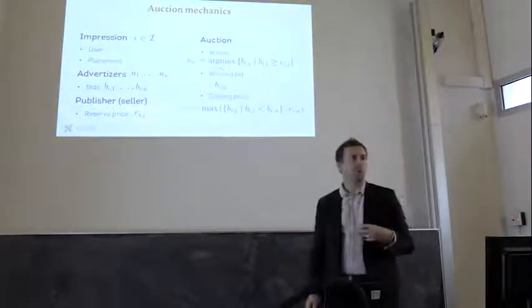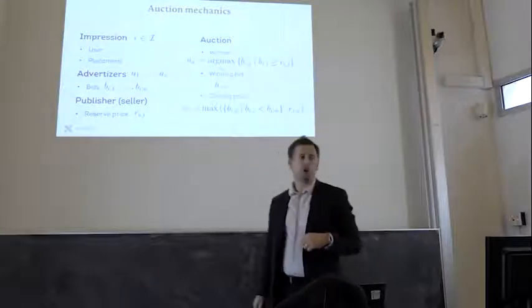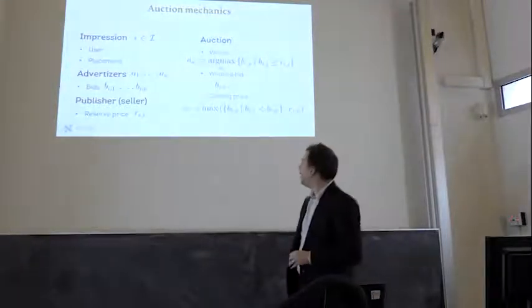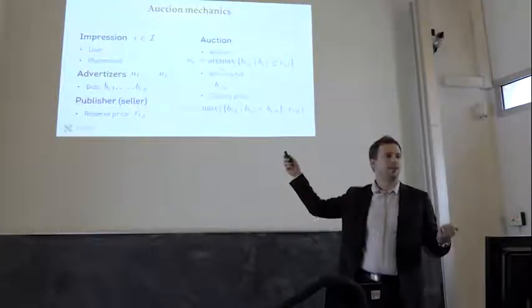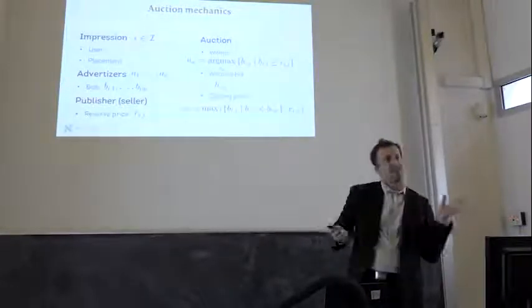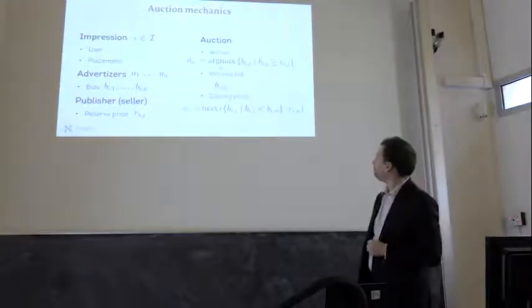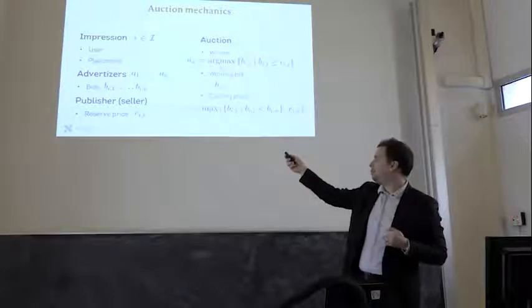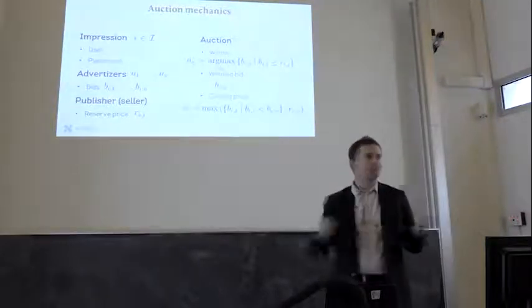You have advertisers that are people willing to buy this space to display an ad. These advertisers 1 to N are bidding for each impression. BI1 is the bid of Advertiser 1 on the impression I. The publisher can set what we call a reserve price. The bid is the price over which the buyer is not willing to buy an ad. On the sell side, the publisher, the website, can set the reserve price under which he does not want to sell an ad. We put ourselves in a setting where the publisher can set a different reserve price for each buyer, so it can discriminate the price between buyers.